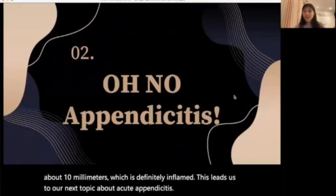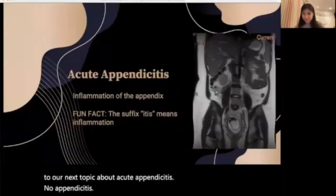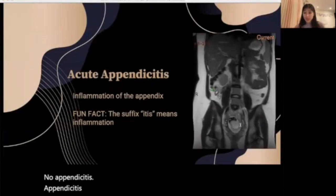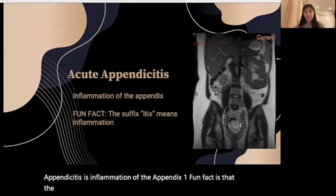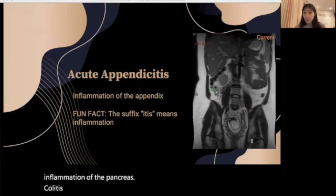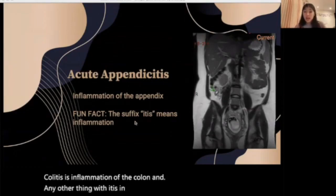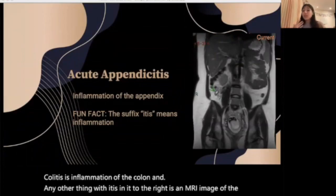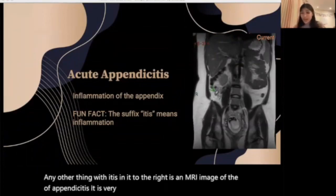Appendicitis is inflammation of the appendix. One fun fact is that the suffix "-itis" means inflammation — so pancreatitis is inflammation of the pancreas, colitis is inflammation of the colon, and so on with any other condition that has "-itis" in it. To the right is an MRI image of appendicitis. It is very subtle, but that little dot is in fact the appendix.